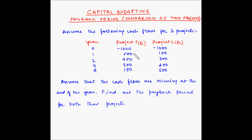For project S, the cash inflow is higher during the early years and then it becomes lesser and lesser, whereas for project L the cash inflows are lesser during the initial years and then keep on increasing. Project S is a short-term project where inflows are higher in the short term and then fade off, whereas project L is a long-term project where inflows are higher in the distant future.